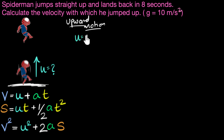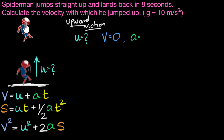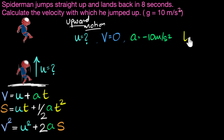Let's see what's given for the upward motion. We need to calculate the initial velocity U. We know the final velocity is zero, because at the topmost point he's at rest before starting back down. We know the acceleration is negative 10 meters per second squared because his velocity is decreasing as he goes up. The big question is: what is the time?